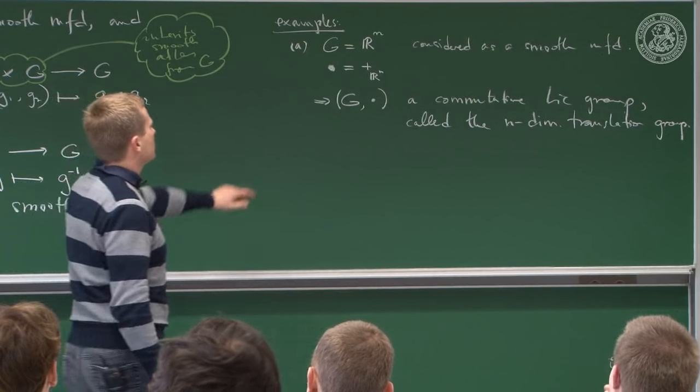It might not seem worth defining, since all it does is fix the first factor of the blob map and see how it acts on other elements. But crucially, this is a map from the smooth manifold G to itself, and we'll use it extensively. We now observe that each L_g is a diffeomorphism.